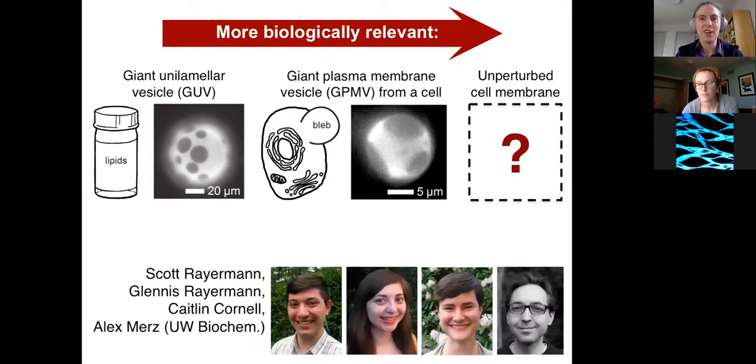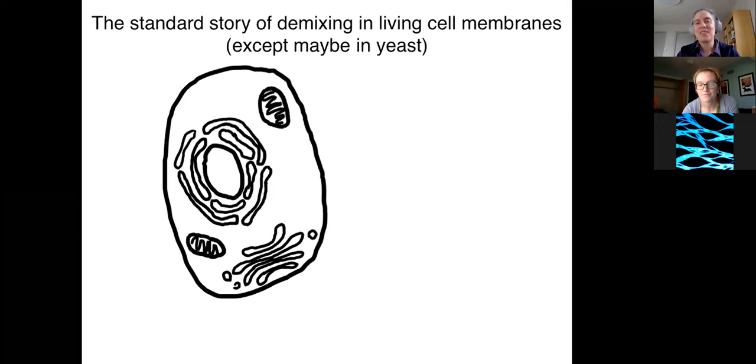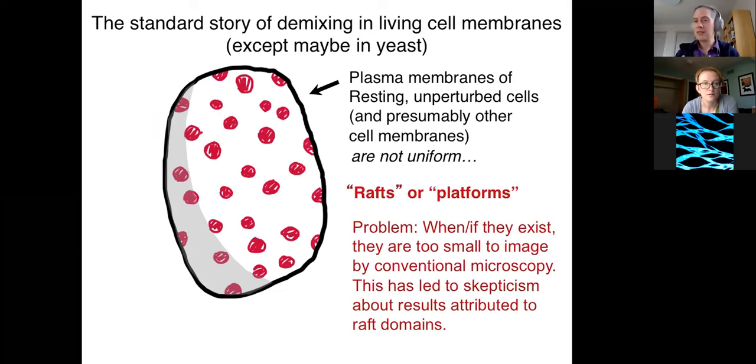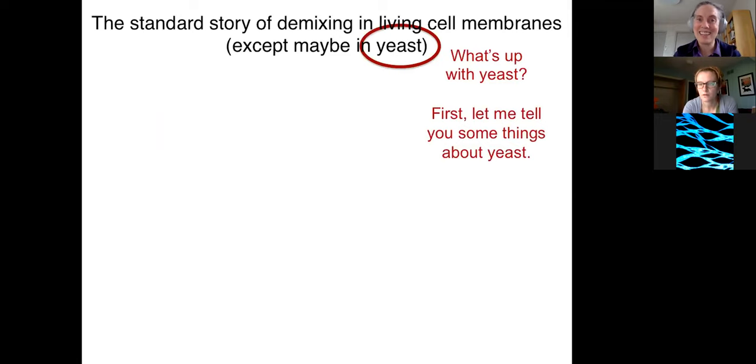Here are the superstars of this particular story, and I want to tell you the story of why there's been some pushback in the community. The idea has been that when you think about a cell membrane, that only thinking about that outer plasma membrane of a resting unperturbed cell and presumably other cell membranes, that it's not uniform. If it is not uniform, it's not uniform on micron scales, but rather that there are rafts or platforms. A problem has been that when and if these domains exist, they're too small to image by conventional microscopy, and that's led some skepticism about results in the field. So is there a case in which we can see very large domains in a membrane? And I'm going to tell you yes, and the answer is in yeast.